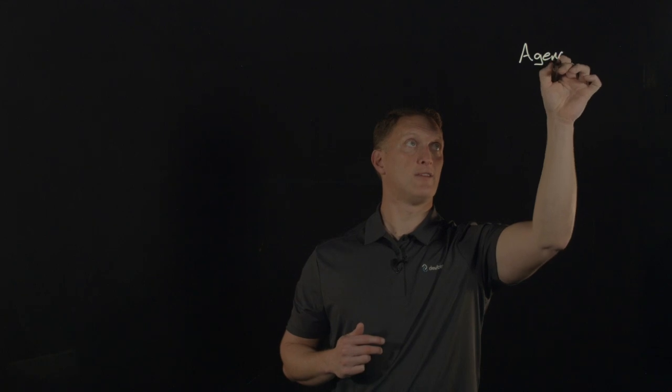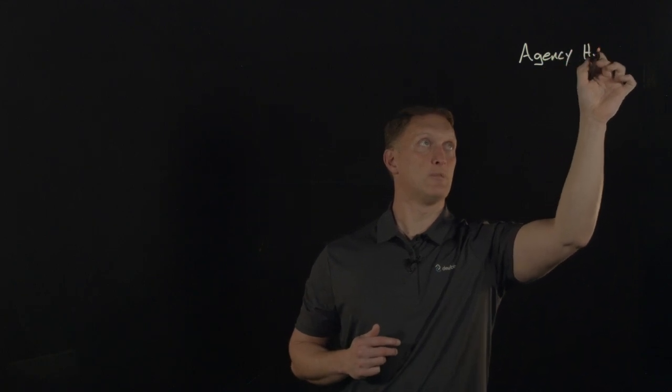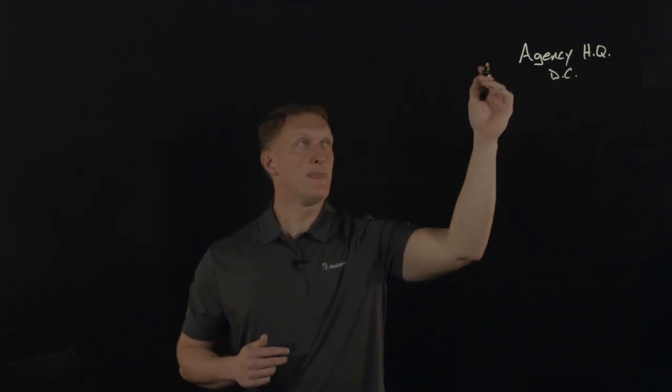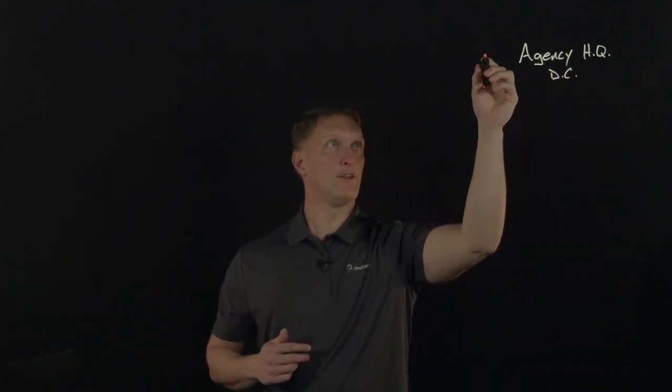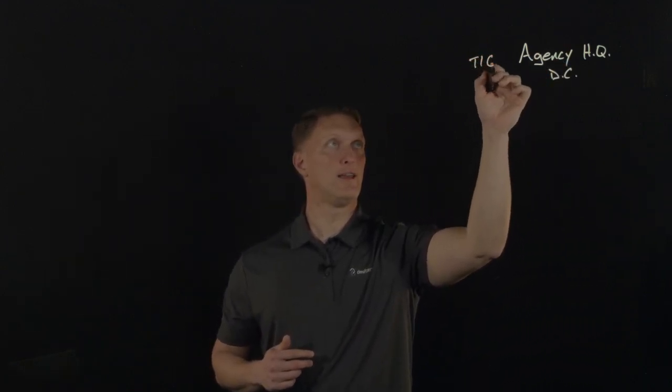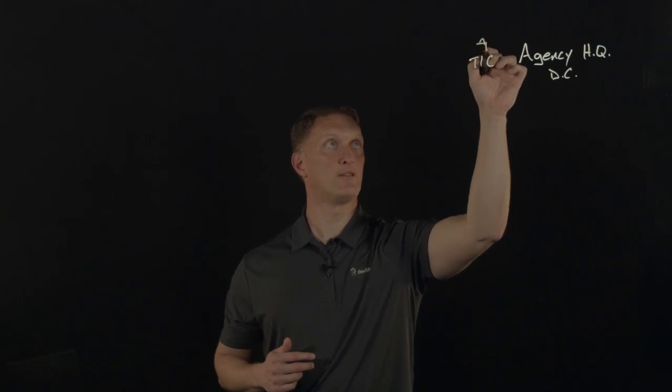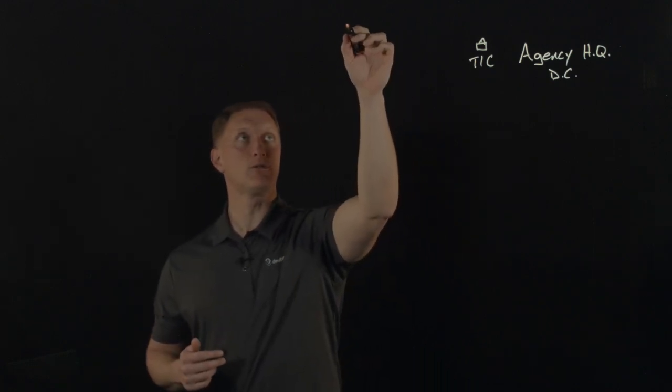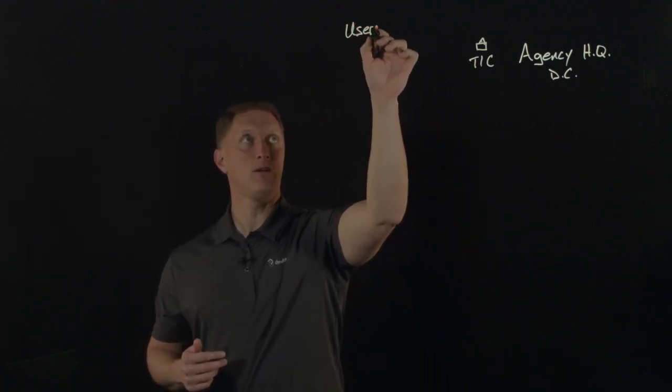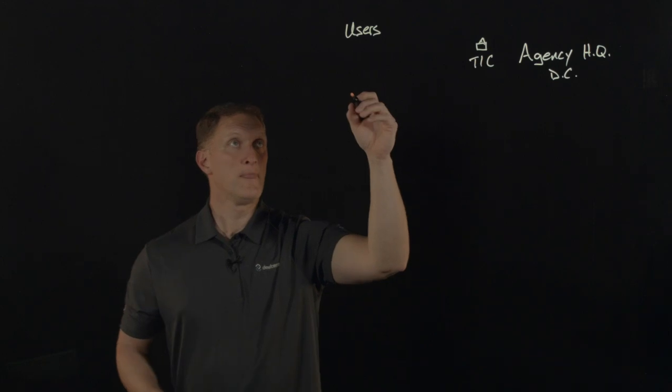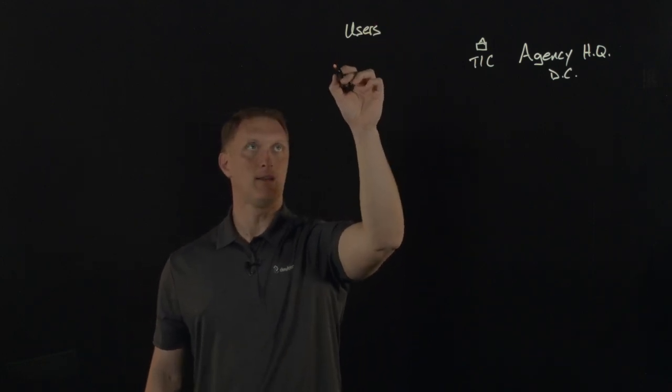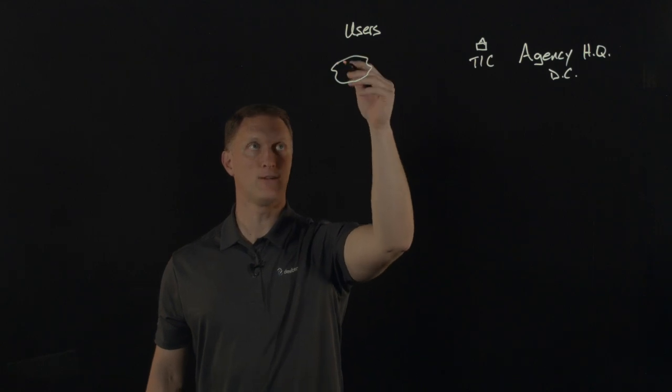So previously you would have a federal agency, maybe headquarters building here. And at the headquarters building you'd have a data center. And at this data center there would be a Trusted Internet Connection. And so I'm going to put a little lock right here to show that this is a secure connection. And you would have users all over the country or frankly all over the world really. And let's say that a user in one location needed to access some cloud-based service.